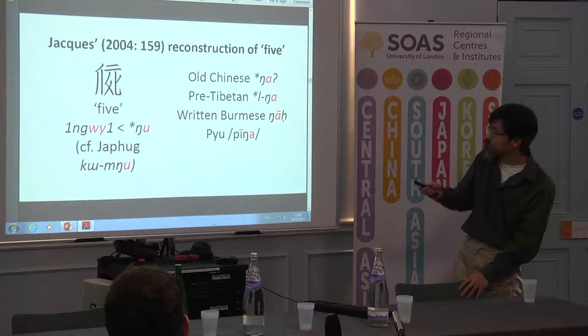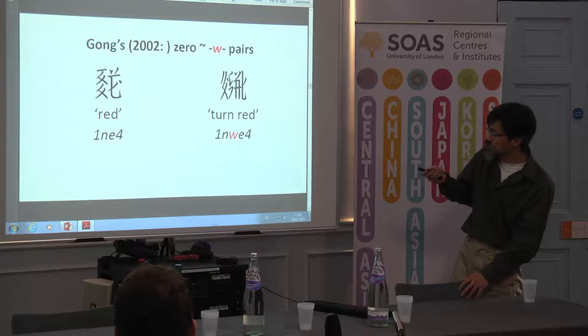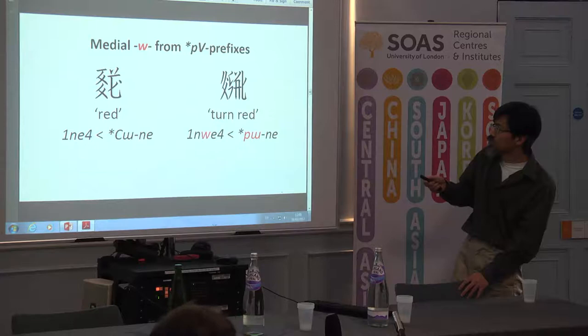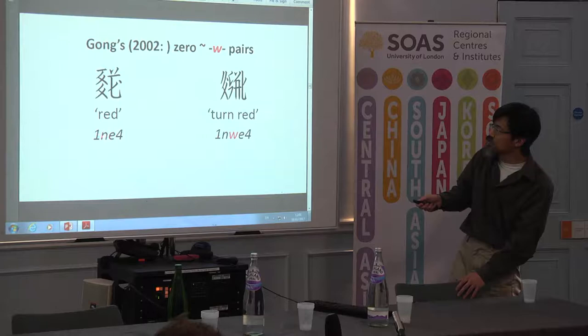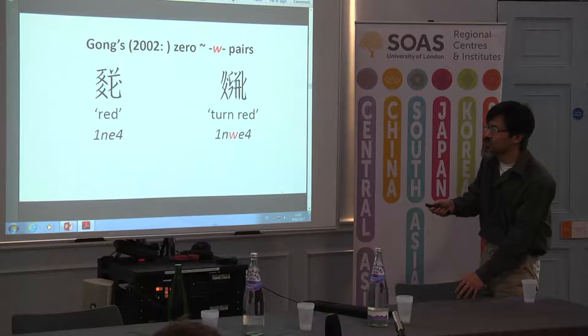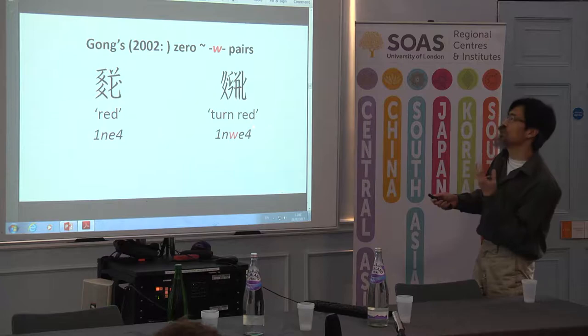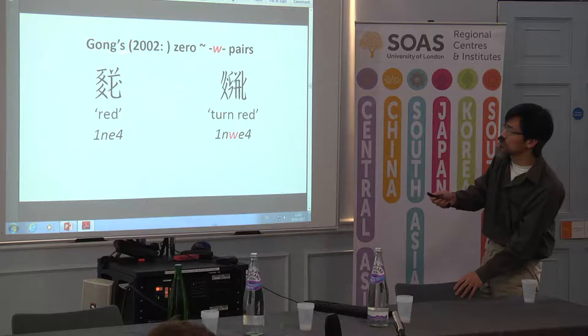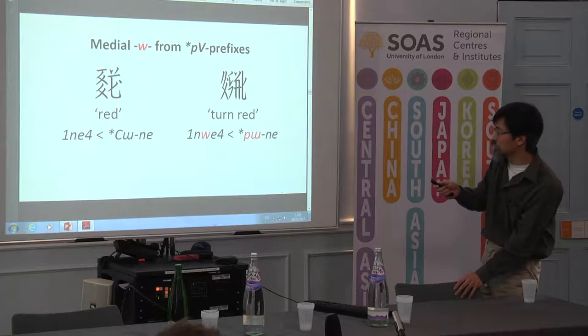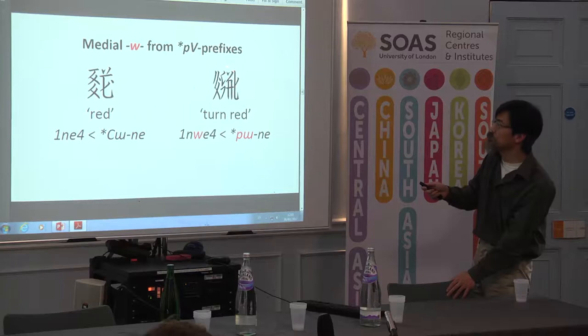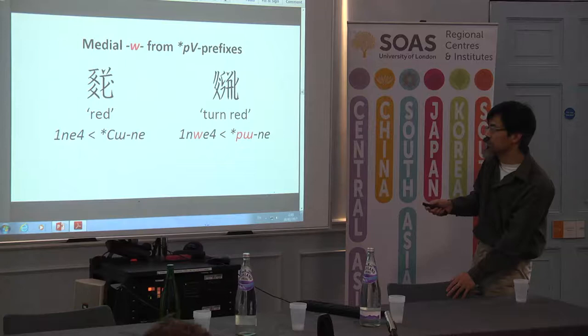I will present a very different solution. Gong Gong Cheng pointed out that Tangut has a number of pairs of words in which one word has no medial W — and this ties into our first talk today — and the second word, which has a similar meaning, such as 'red' and 'to turn red,' has a W in it. In 2012 I published a paper theorizing that these medial W's came from earlier P prefixes.